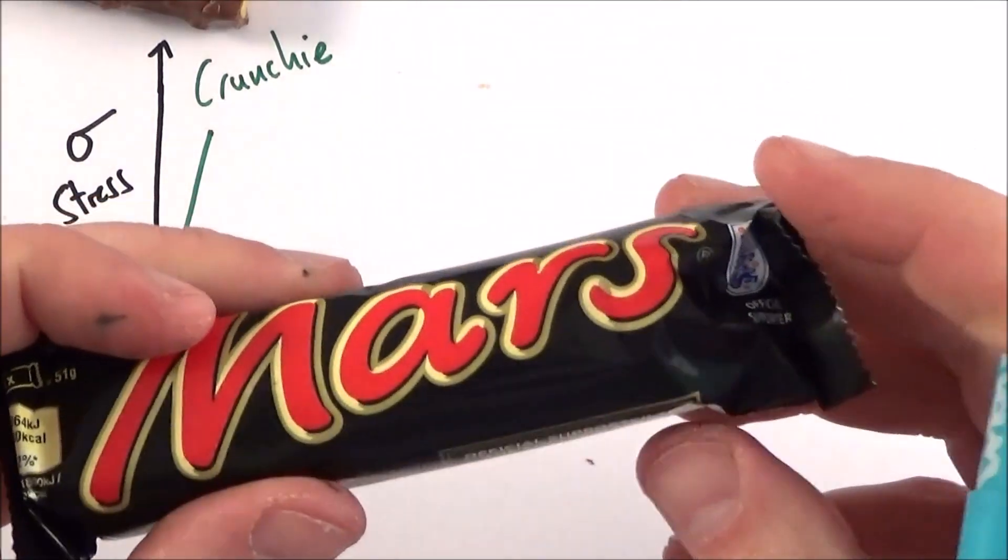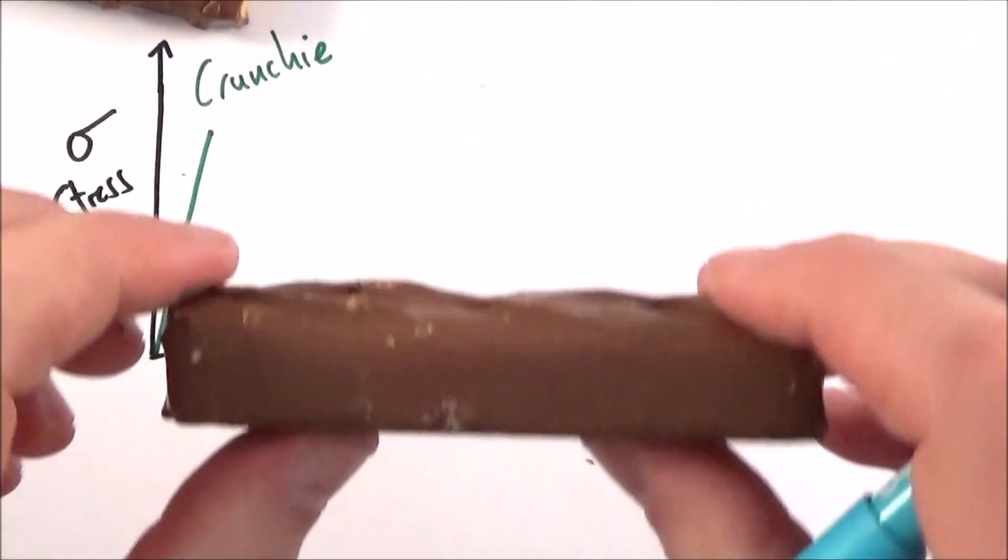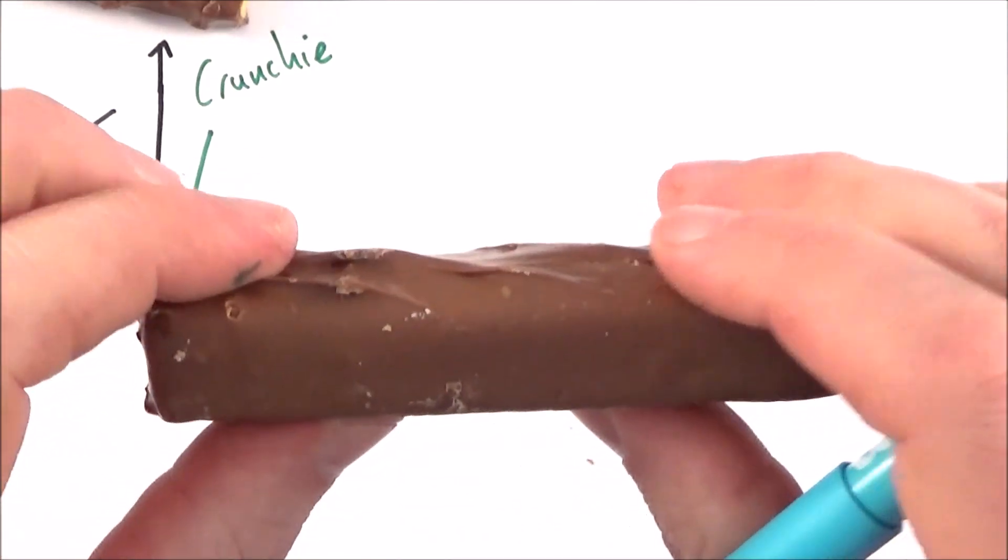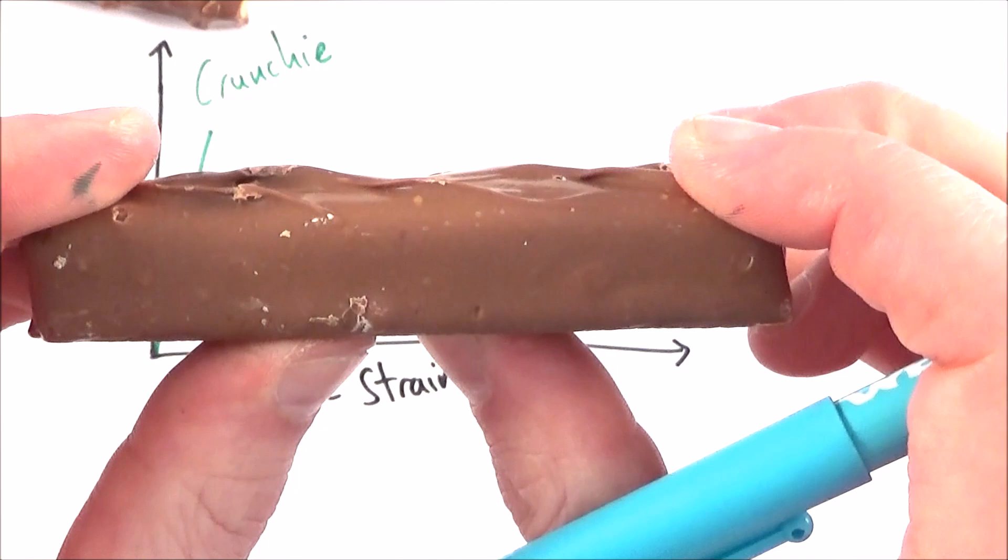Next up, we have a Mars bar. So the Mars bar might not be as strong as the Crunchy, but what we find is that if we apply a load to it, and I'm just going to apply a force in the middle, is that it doesn't just fracture.